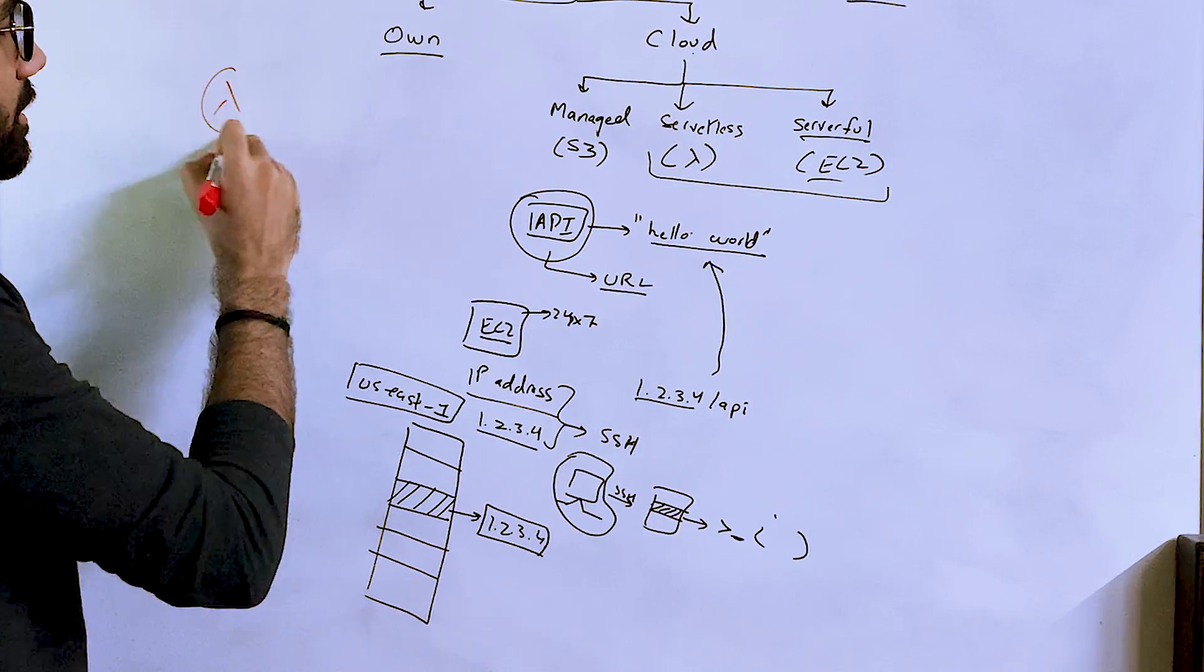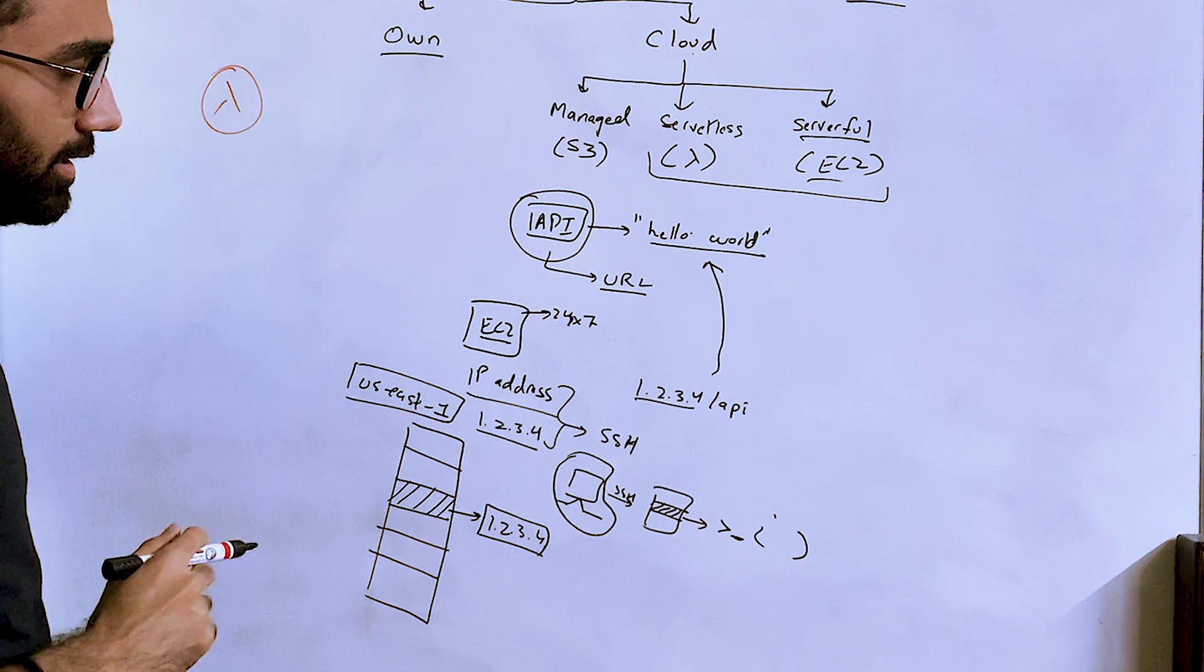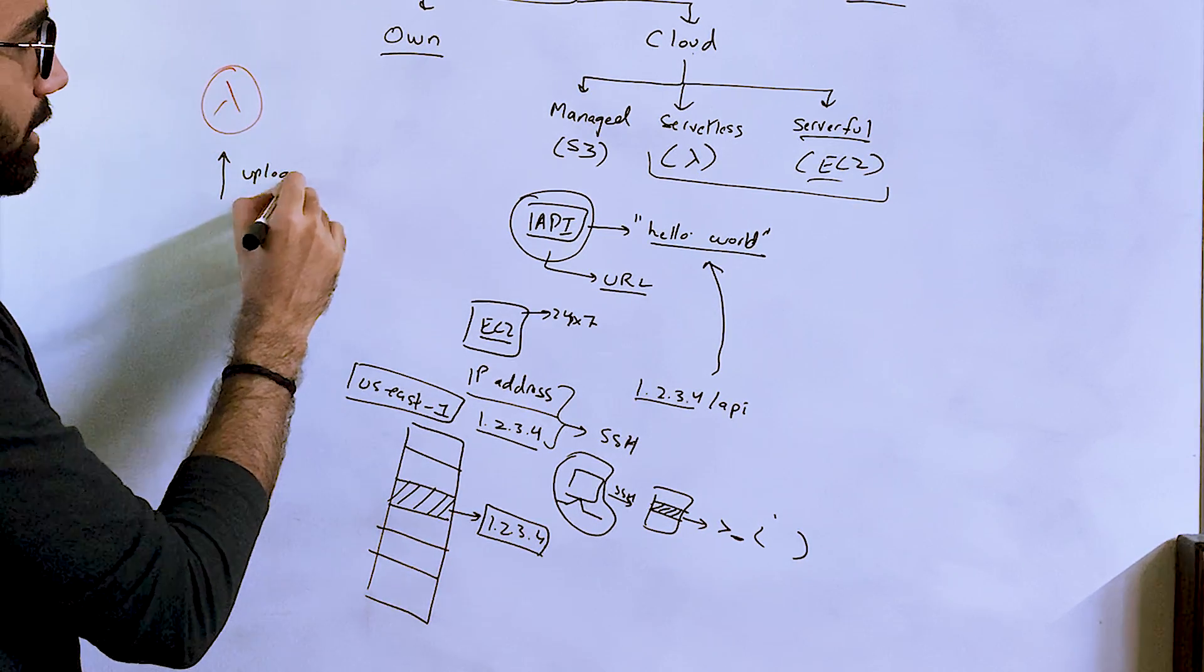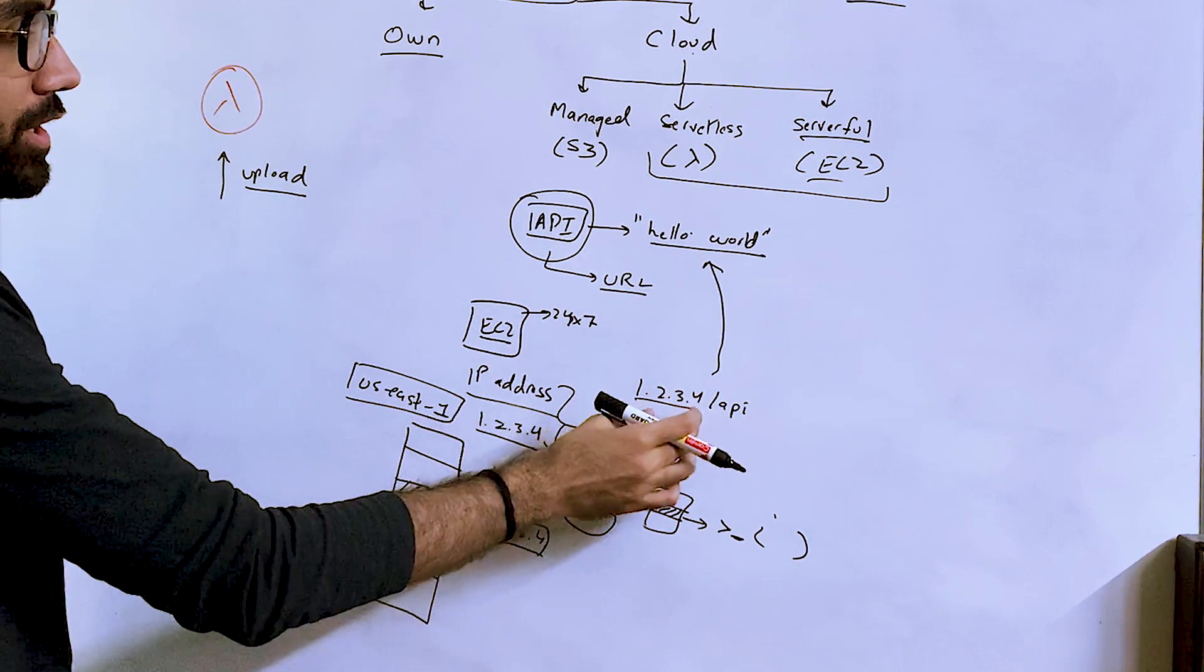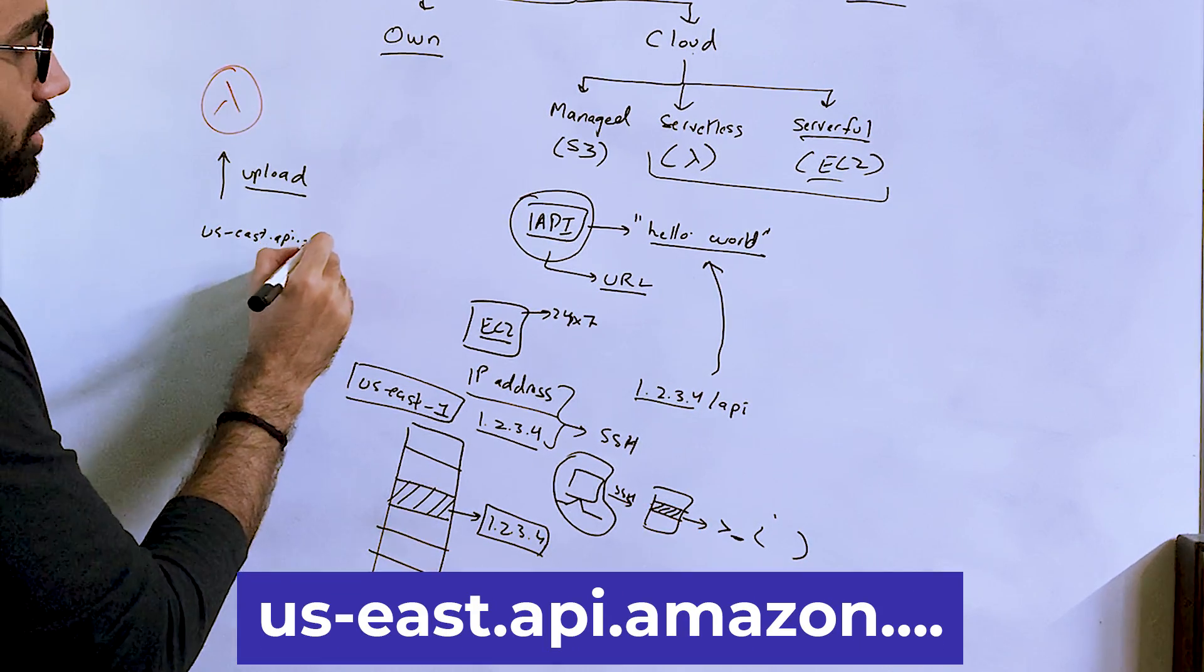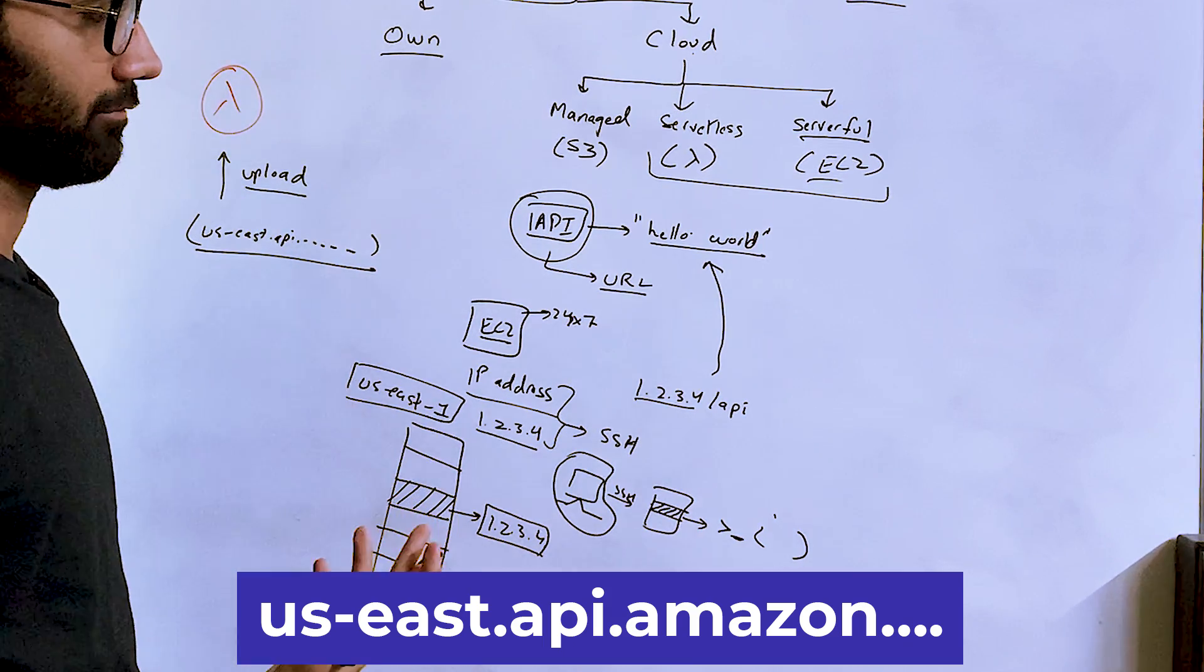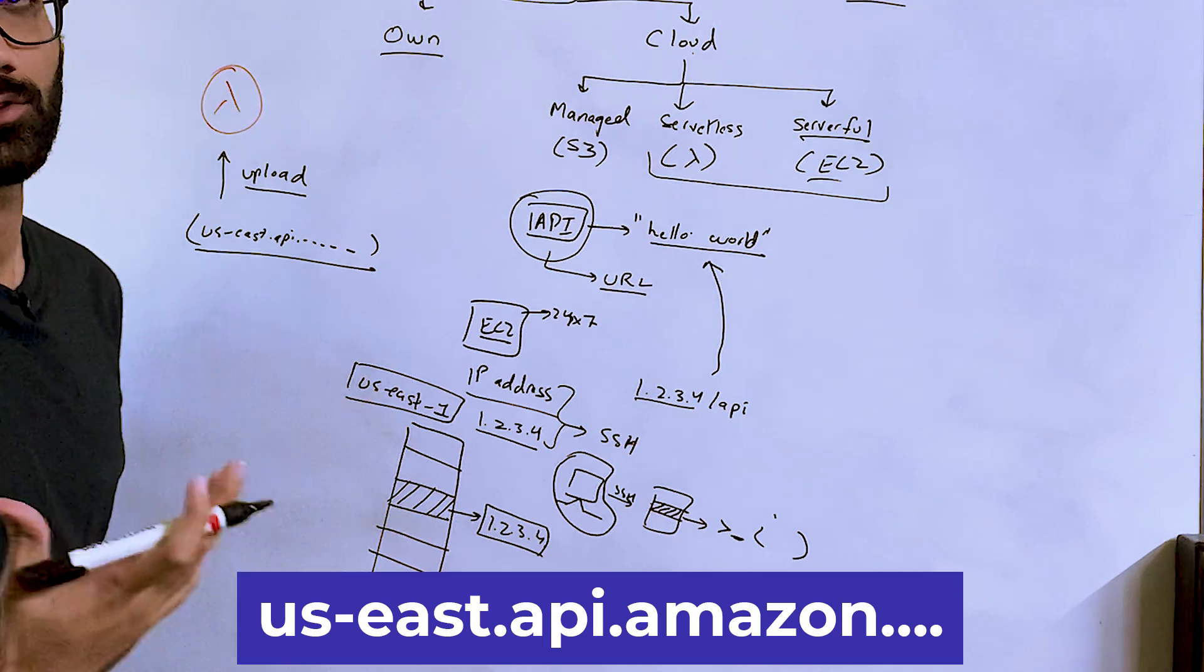On the other hand, when we talk about serverless, for example, these services, what they usually require you to do is upload a bunch of code, which should be executed on a predefined endpoint. And this endpoint usually will never have an IP address. So they will give you a host name like us.api.amazon.whatever it is. And you would have the option to use custom domains and everything fancy with it. But at the end of the day, you are getting an abstracted solution.